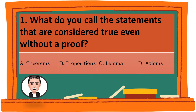Question 1. What do you call the statements that are considered true even without a proof? A. Theorems. B. Propositions. C. Lemma. D. Axioms. The correct answer is D. Axioms.